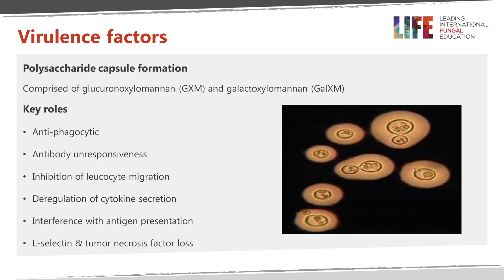A little more detail about the capsule. Here we can see a wide capsule shown with the India ink stain and some budding yeast. This capsule confers a number of virulence attributes to the organism. It's antiphagocytic — it's a very slippery structure and it's very difficult for phagocytes and macrophages to grapple with it. It does not seem to evoke an antibody response, it inhibits leukocyte migration, it's implicated in deregulation of cytokine secretion, it interferes with antigen presentation, and we also know something about the role of L-selectin and tumour necrosis factor loss.